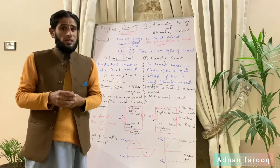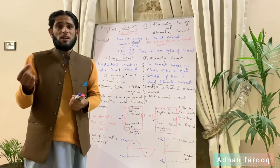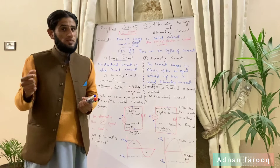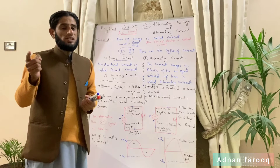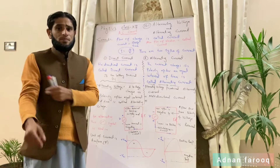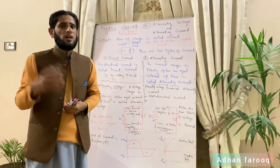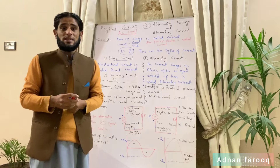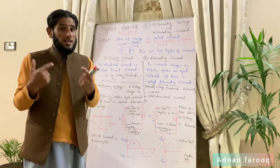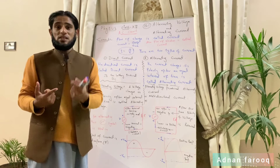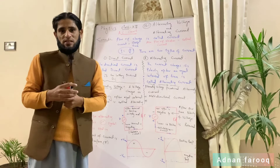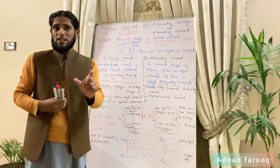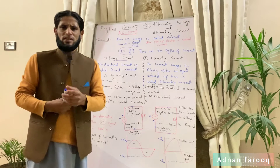کسی بھی جگہ پر charge flow کرے گا، motion کرے گا، حرکت کرے گا، تو current بنے گا۔ Current کو I سے represent کرتے ہیں۔ Flow of charge conductor میں آسانی سے ہوتا ہے۔ Conductor وہ material ہے جس میں سے charges easily flow کریں — charges آسانی سے flow کر سکیں — اسے conductor کہتے ہیں۔